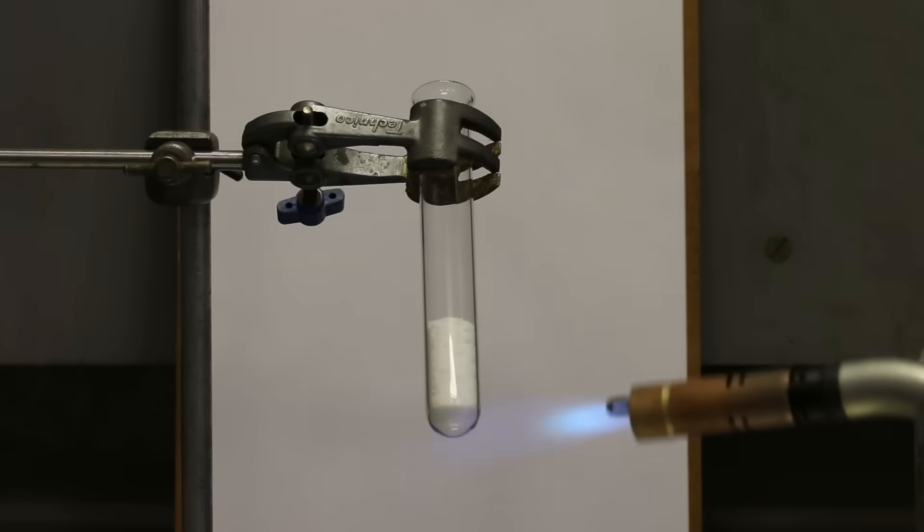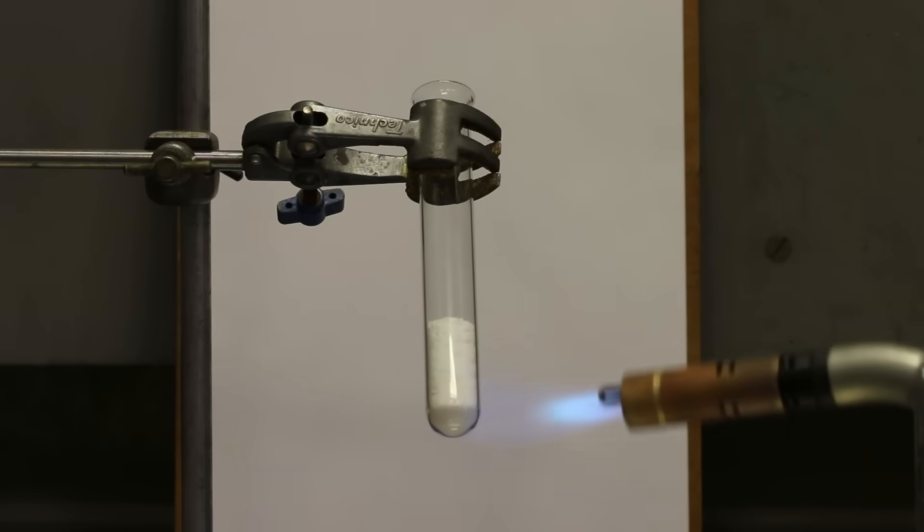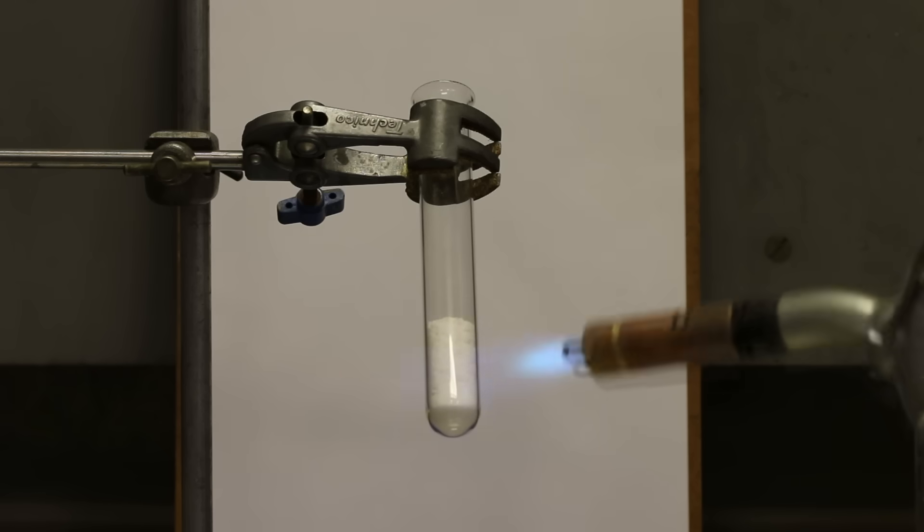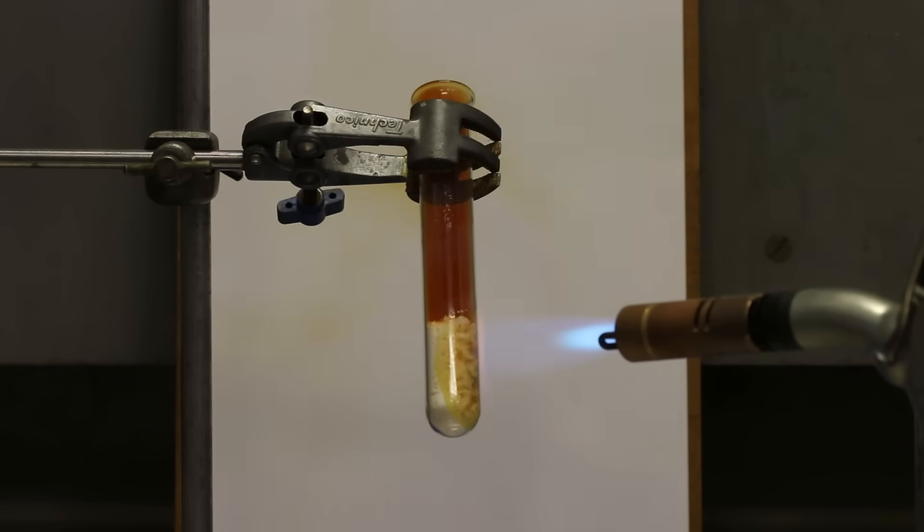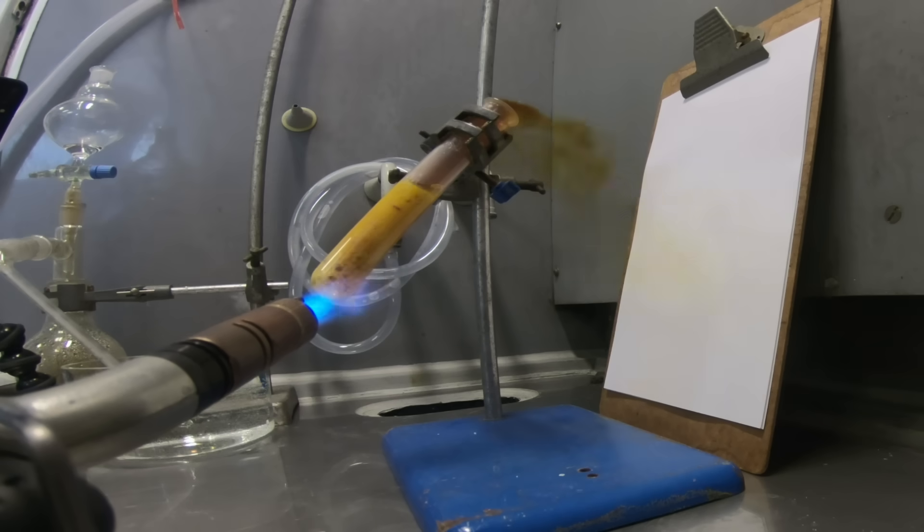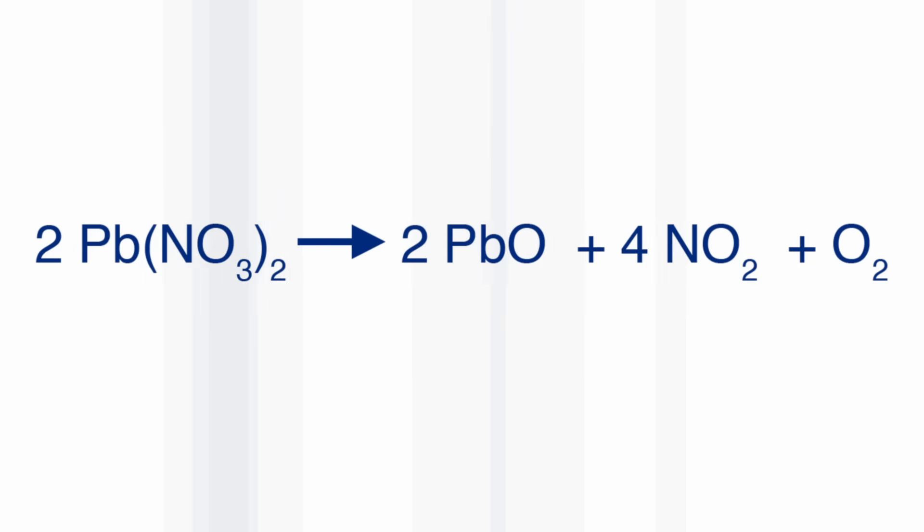It's quite easy to make NO2. The standard way is just to heat up lead nitrate. Lead nitrate is lead 2 plus NO3 minus. And when you heat it up, you form lead oxide, which is a sort of slightly yellowy orange color, and you make NO2, which is a brown gas. And when we heated it up, we got really quite a sort of substantial plume of NO2.